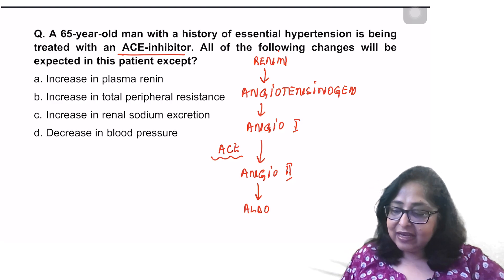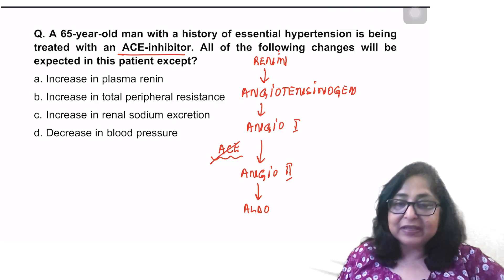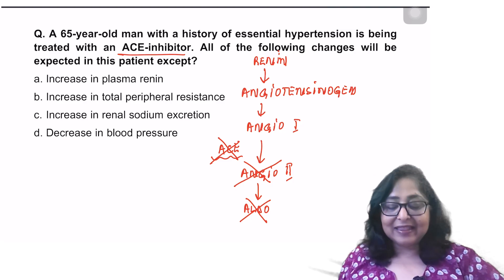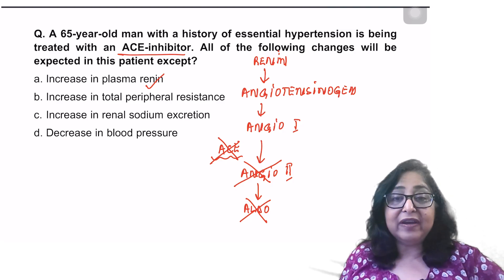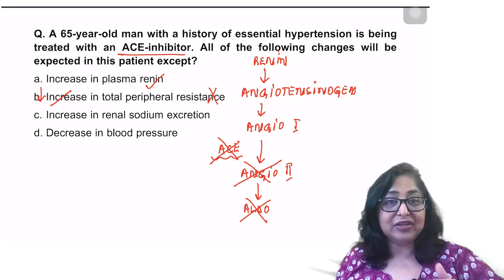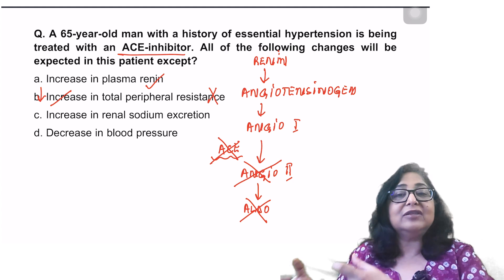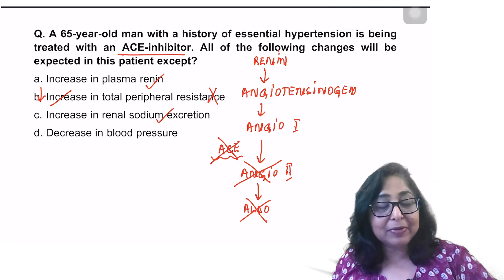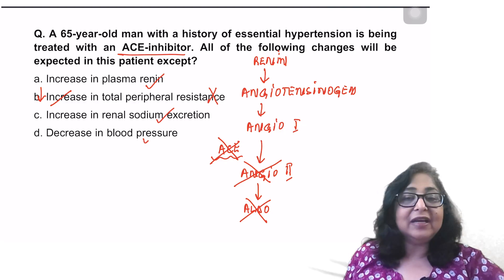Looking at the options: will there be an increase in plasma renin? Since we are giving an ACE inhibitor, there is decreased formation of angiotensin 2 and aldosterone, so we expect increased plasma renin activity. Will there be an increase in total peripheral resistance? No — in fact there is a decrease, as angiotensin 2 is now reduced. Is there an increase in sodium excretion? Yes, because less aldosterone means more sodium is lost in the urine. Will there be a decrease in blood pressure? Definitely — ACE inhibitors are very important antihypertensives.